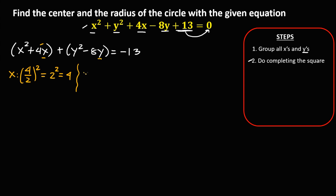Then for y, take this number — we have 8 — then divide by 2 and take the square. 8 divided by 2 is 4, to the power 2. And 4 to the power 2 is 16.